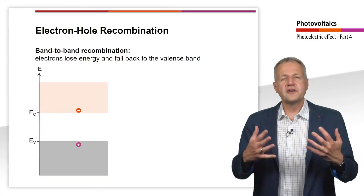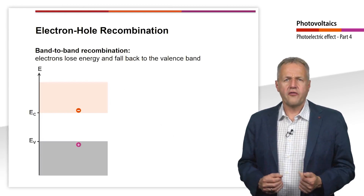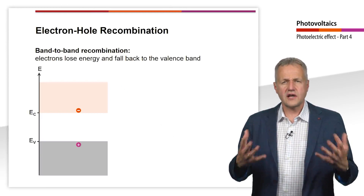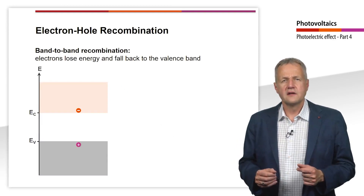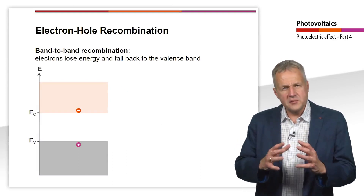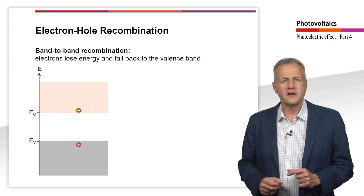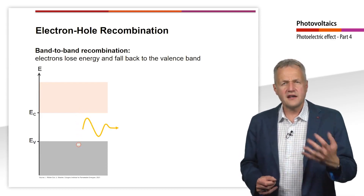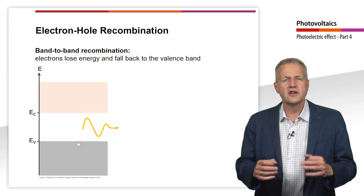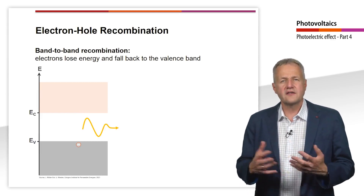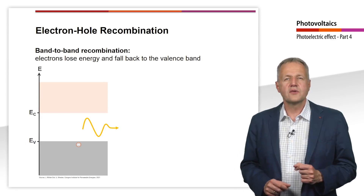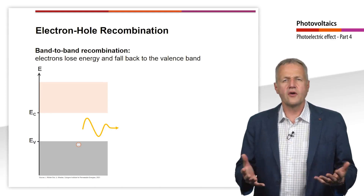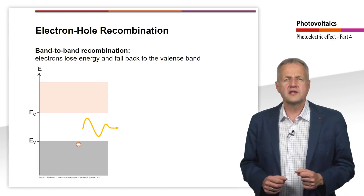We also consider the recombination of free charge carriers. An electron is in the conduction band. In close proximity, there is a hole in the valence band. It can happen that the electron gives up its energy and falls from the conduction band to the free place in the valence band — it recombines with the hole. The energy that the electron loses in the recombination is given off in the form of heat or radiation.